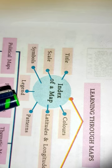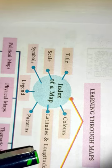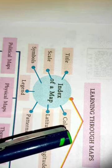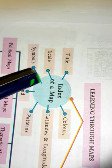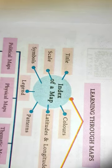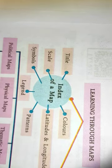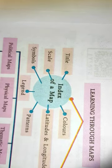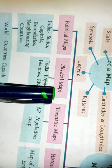Learning through maps — types. The first topic is the index of a map. These are the elements of maps. They are: title, scale, symbols, legend, patterns, latitudes and longitudes, and colors. These are the main components of the map.